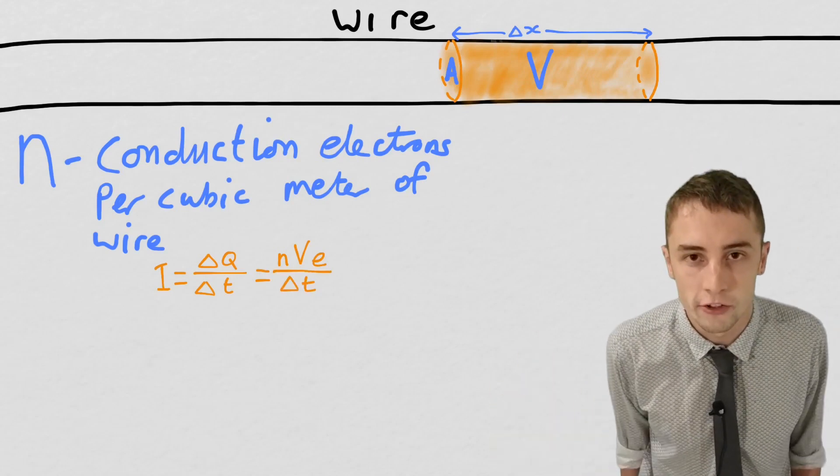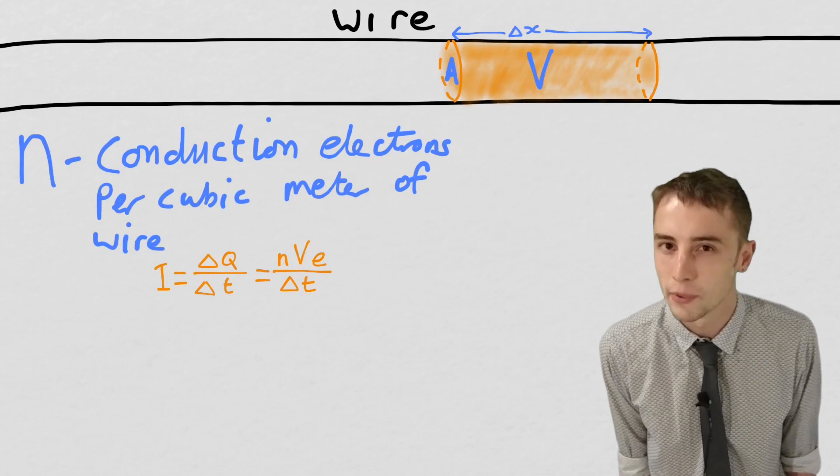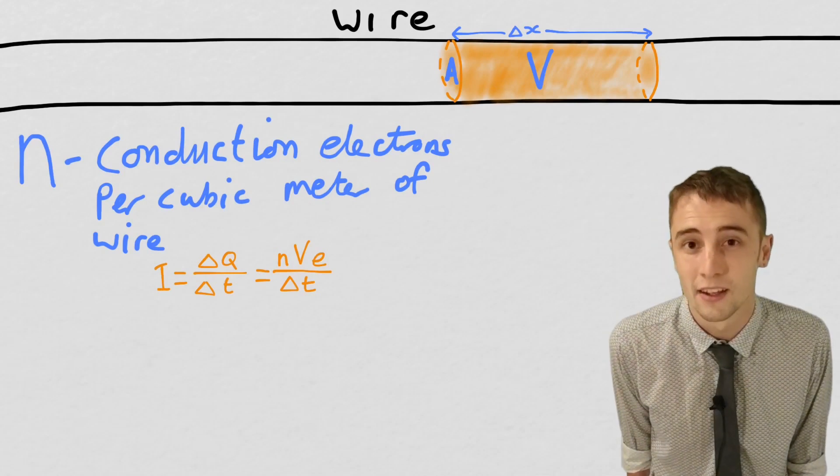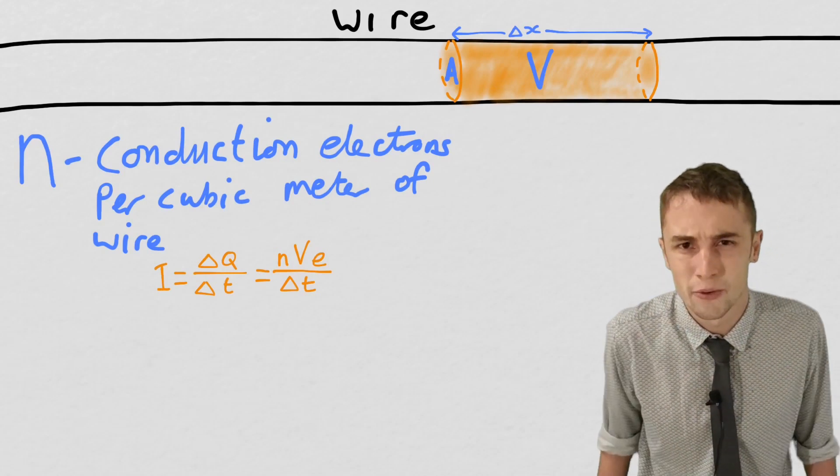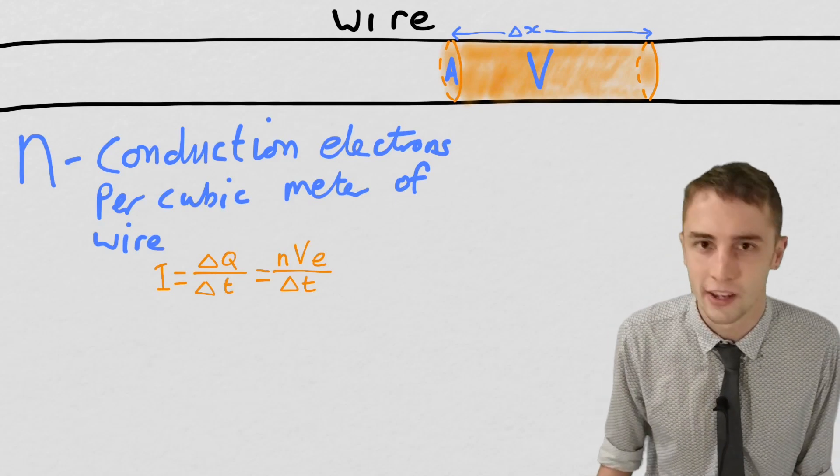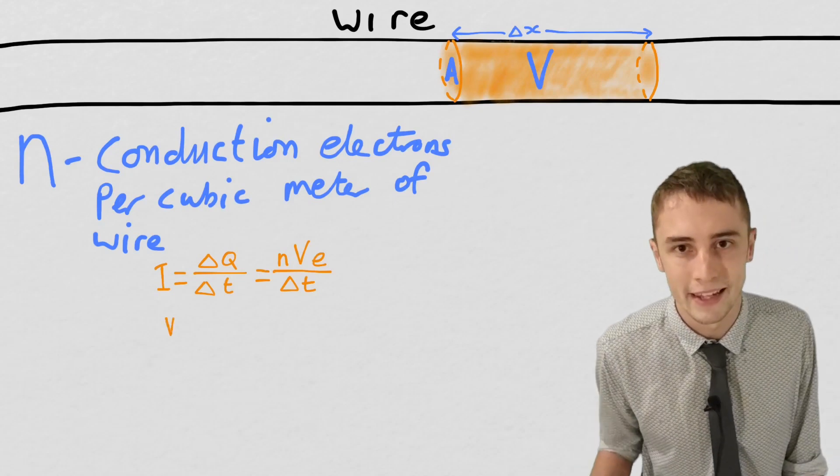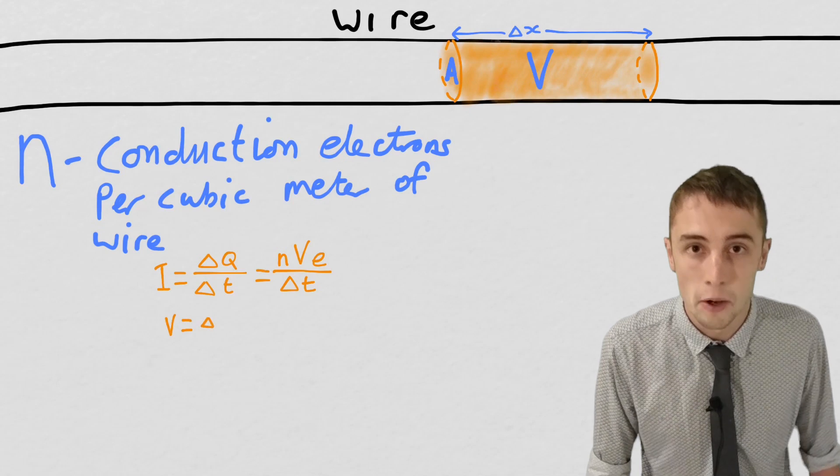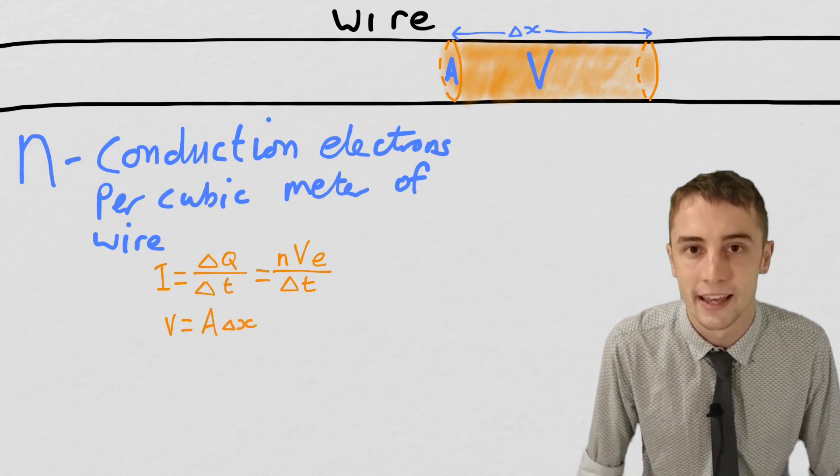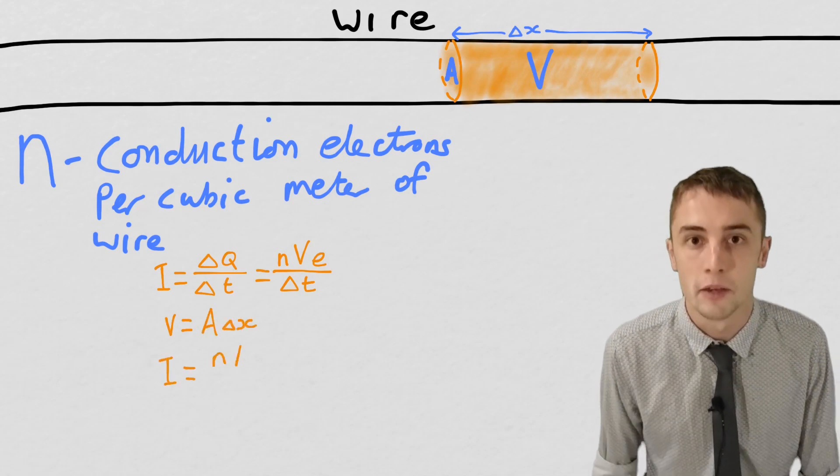Now there's a few things that we can do here. So firstly, I'm going to replace V, capital V. I'm going to replace the volume with how we would work out volume. That is the cross-sectional area multiplied by the length, or the cross-sectional area multiplied by delta x. So the amount of distance that it moves through.